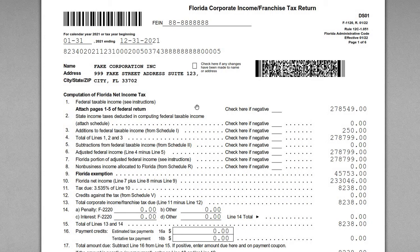For this video I wanted to go over an example of how to complete a Florida corporate income tax return. This is the Florida F-1120, filed generally for C corporations that are either set up in Florida or conducting business within the state. Florida doesn't have a state income tax for individuals, so pass-through entities and individuals earning income generally don't owe any tax, but if you're a corporate entity set up in or doing business in Florida, you might have to file this return and pay some tax.